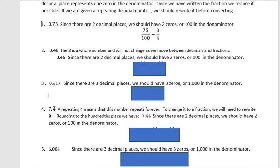The second one, three and 46 hundredths. Three is a whole number and will not change as we move between decimals and fractions. Since there are two decimal places, we should have two zeros or 100 in the denominator again.